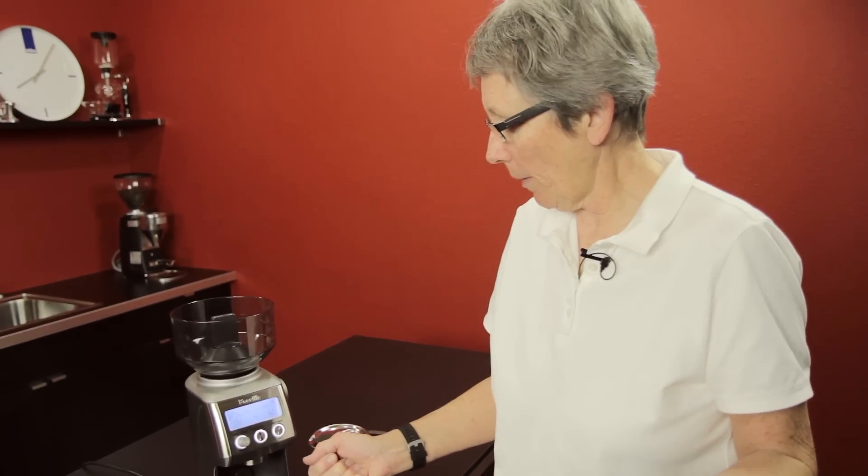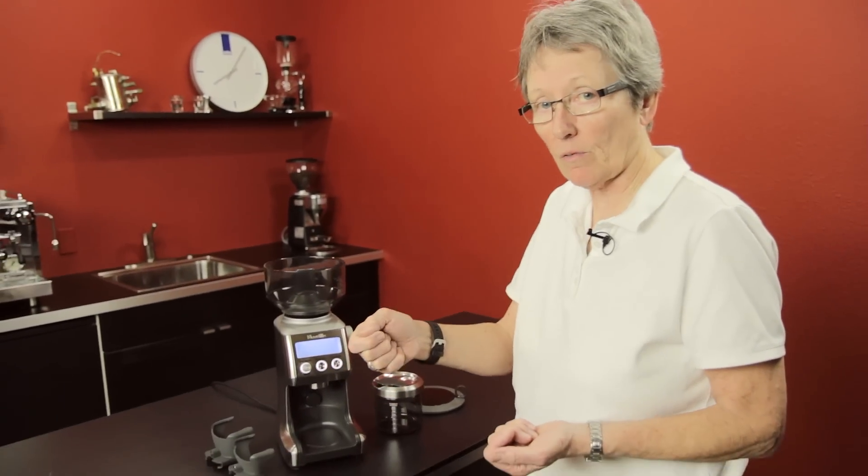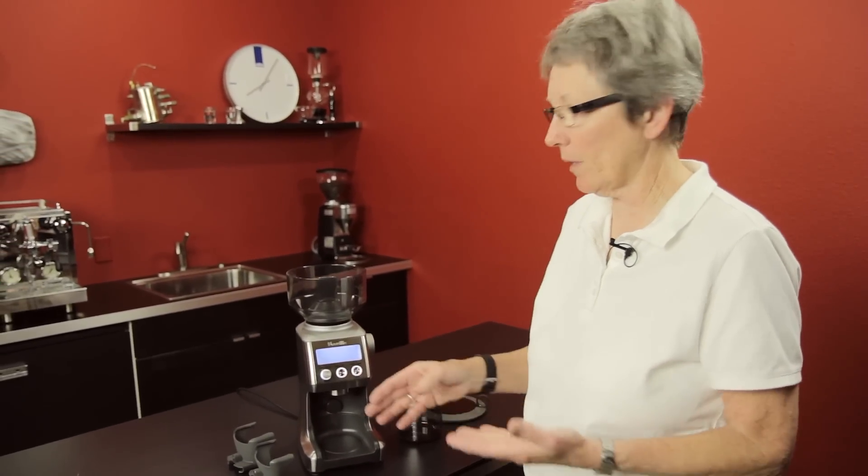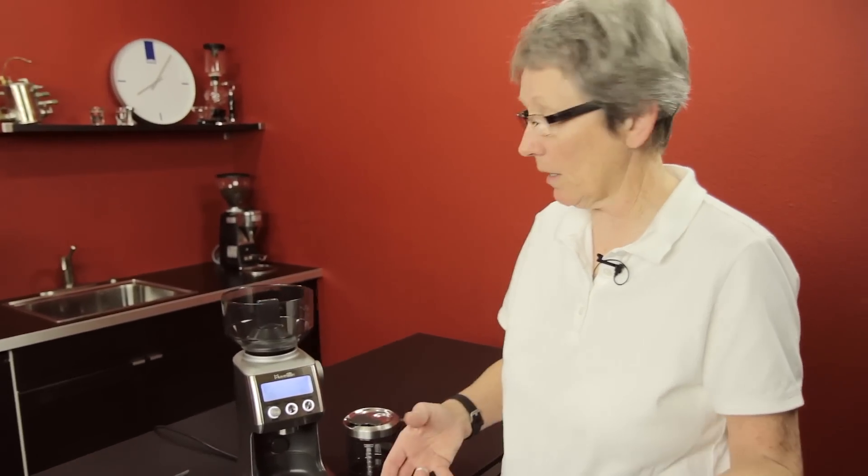If you're grinding for like a double basket or a triple basket, you grind for like the eight seconds or so, and you want to shake it out, you stop it, shake it out, and it isn't really stopping it, it's pausing it. Put it back in, hit start again, and then it completes the remainder of the time left on that 18 seconds. That's kind of nice. That's a new feature.